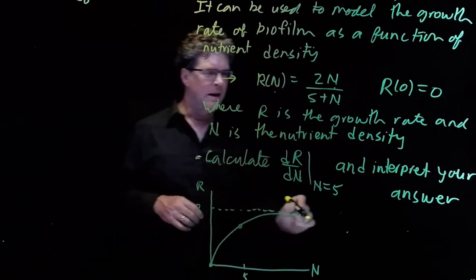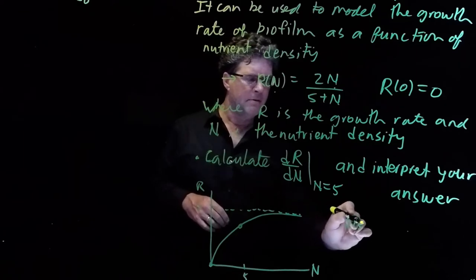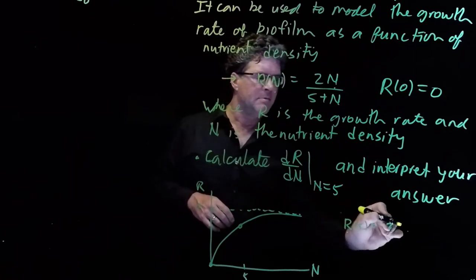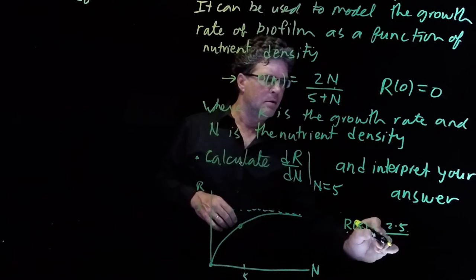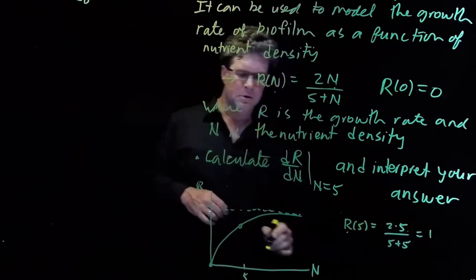n is equal to 5, and r of 5 is equal to 2 times 5 over 5 plus 5, which is equal to 1.